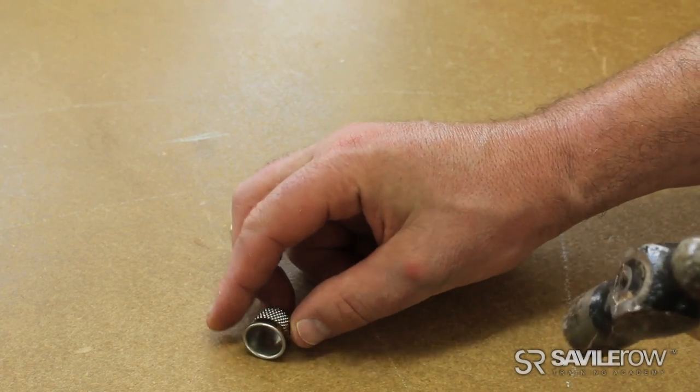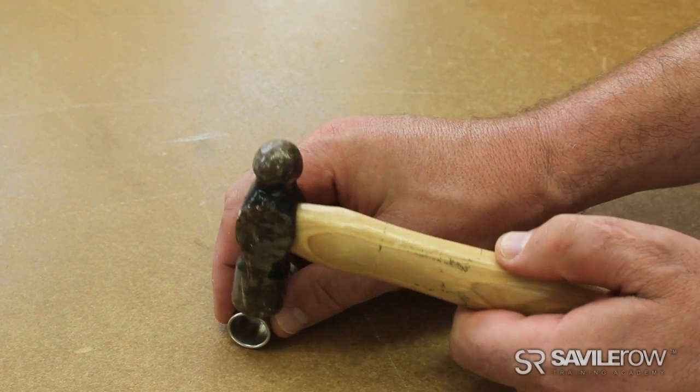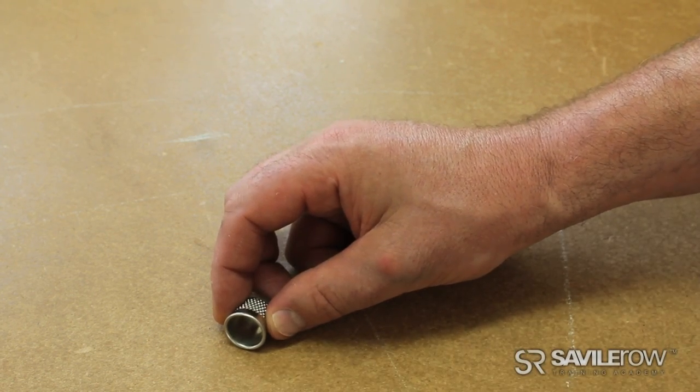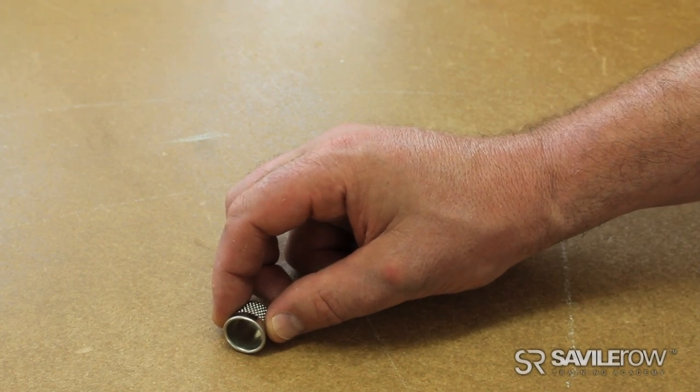So literally we're going to lay the thimble down and just give it a good couple of little taps with a small hammer. Don't hit it too hard, you will break it.